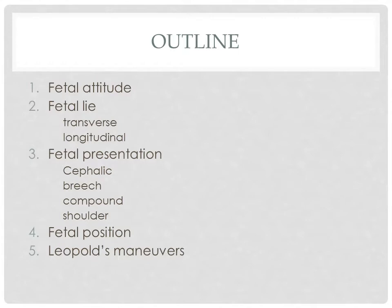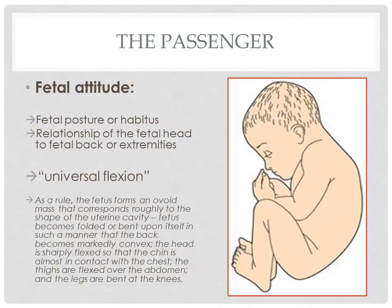This is the outline of our lecture. First we talk about fetal attitude, also called fetal posture or habitus — the relationship of the fetal head to the fetal back or extremities. We have what we call universal flexion, where the fetus forms an ovoid mass corresponding to the shape of the uterine cavity. The fetus becomes folded upon itself such that the back becomes markedly convex and the head is sharply flexed so that the chin is almost in contact with the chest.